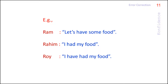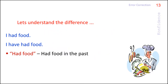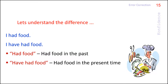To get the answer, we should have a sound knowledge about the uses of tenses. When we say 'we had food,' we mean we had food at some point in the past and we don't mind having food at the time of speaking. But when we say 'we have had food,' we mean we completed having food in the present time and we don't want food at the time of speaking. Hence, we can make sure that Ram ordered food for Rahim, who said 'I had my food.'